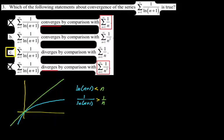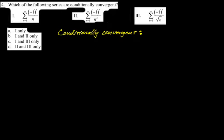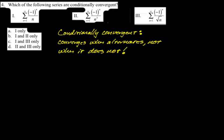Number four: which of the following series are conditionally convergent? Conditionally convergent means the series converges when it alternates but does not converge when it does not alternate. We look at each series, take the absolute value of the nth term, and ask: does that give a convergent series? If yes, it's absolutely convergent — exclude it. If no, we then check if the alternating version converges. Based on the alternating series test, all of them converge when they alternate.